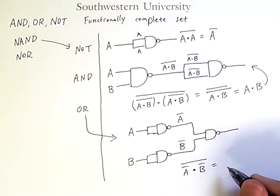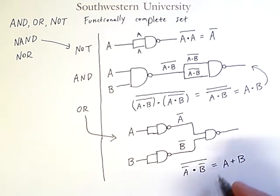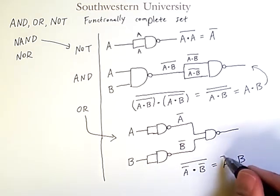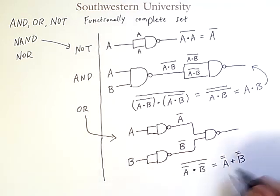But using De Morgan's law, this is equivalent to A or B. Or if we want to be strict with our steps, it's equivalent to NOT NOT A or NOT NOT B, which through double negation equals A or B. So, this is the result we get as output there.